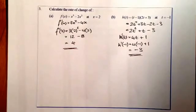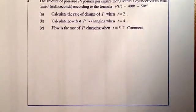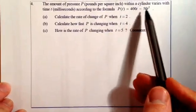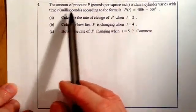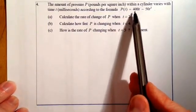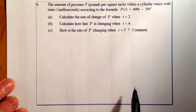From there, we're just going to work through question 4. The amount of pressure P in pounds per square inch within a cylinder varies with time in milliseconds according to the formula P of t equals 400t minus 50t squared.